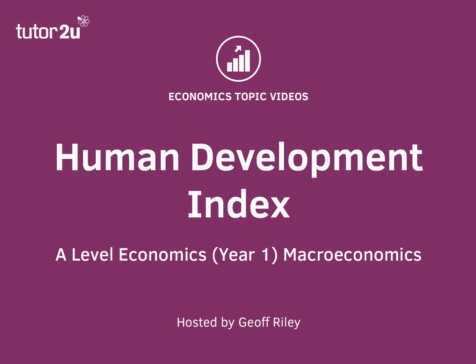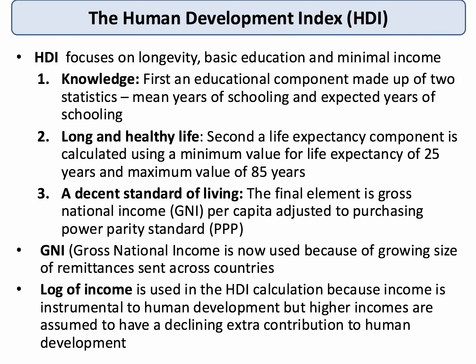This is a Year One macro topic video looking at the Human Development Index, or HDI for short. The HDI was introduced by the United Nations in 1990 and is based on three sets of important indicators: knowledge, long and healthy life, and decent basic living standards. The HDI quantifies these three important areas to give a fuller picture of human development than pure GDP alone.